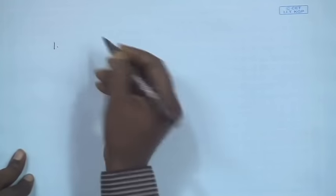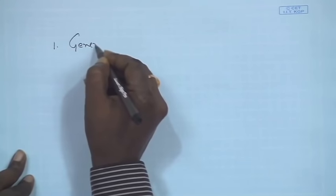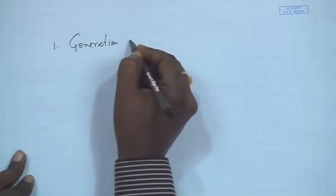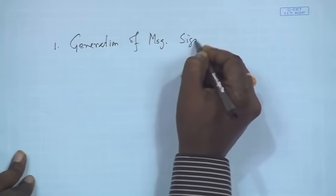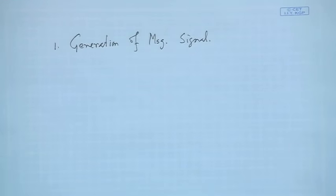There are plenty of examples — telephony is probably the oldest example of communication. Whenever you do communication, there are a few steps. The first step is the generation of the message signal.